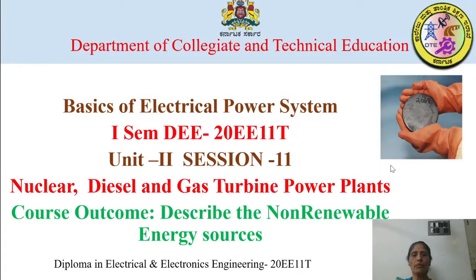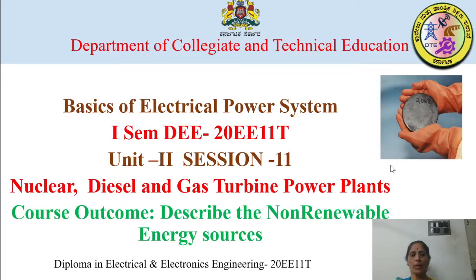Hello students, I welcome all of you to the LMS on the Basics of Electrical Power System, an initiative taken by the Department of Collegiate and Technical Education. Let us start with Unit 2, that is the Nuclear, Diesel and Gas Turbine Power Plant. The Course Outcome for this Unit is to describe the Non-Renewable Energy Sources.